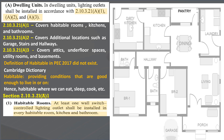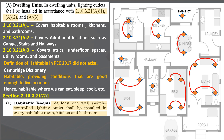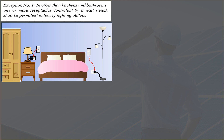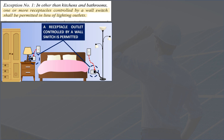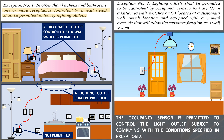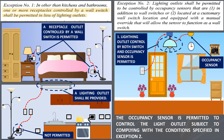Subsection 2.10.3.21(a)(1) states that at least one wall switch-controlled lighting outlet shall be installed in every habitable room, kitchen, and bathroom. The light switch's location is not addressed in the code — it can be anywhere inside the room, but the best place is near the entrance. In Exception 1, a receptacle outlet controlled by a wall switch is permitted to serve as the required lighting outlet in habitable rooms, except in kitchens and bathrooms. In Exception 2, occupancy sensors are permitted for switching lighting outlets in habitable rooms, kitchens, and bathrooms.